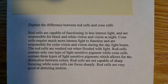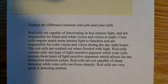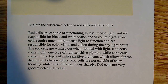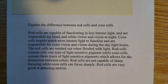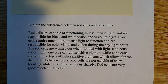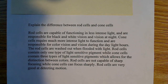First of all, rod cells are capable of functioning in less intense light. The rod cells are what allow you to see at night, essentially. They allow you to see under low light conditions. And they're responsible for your black and white vision, for your non-color vision and your vision at night.